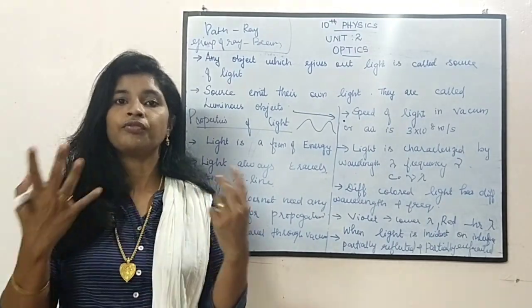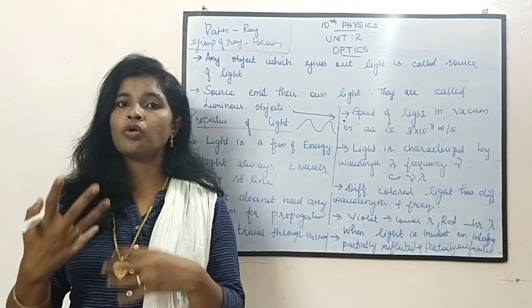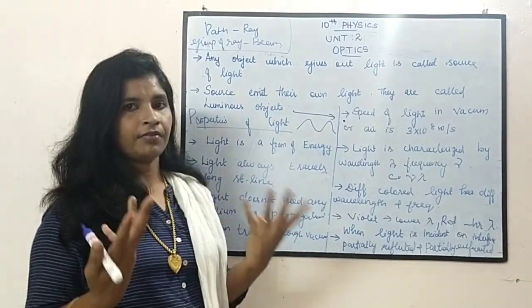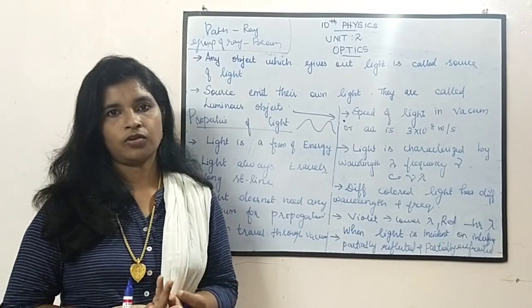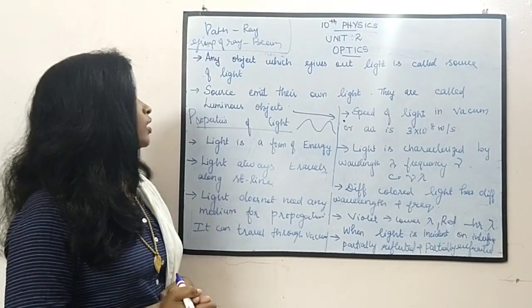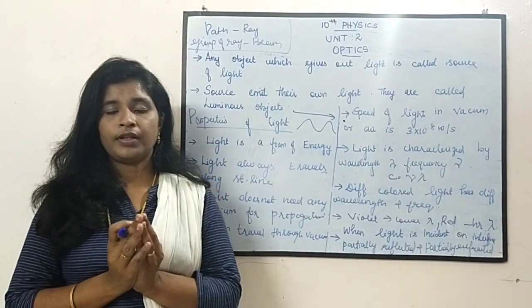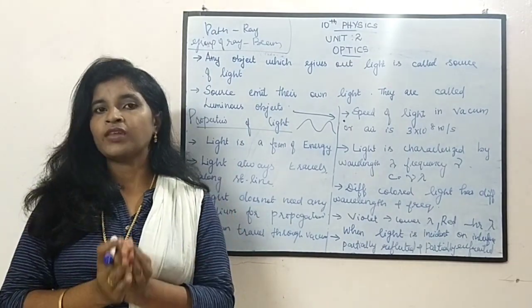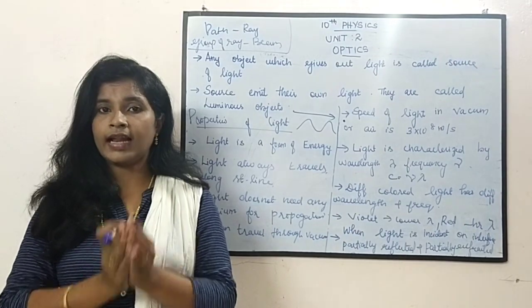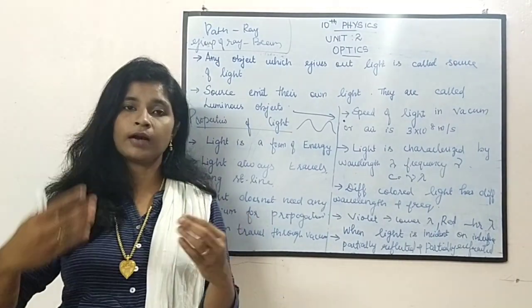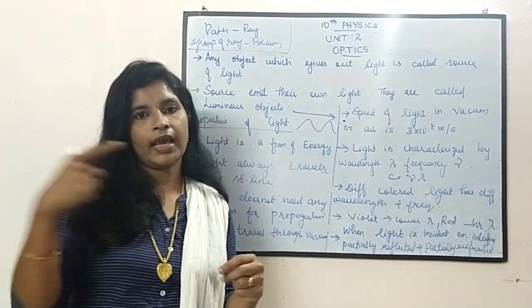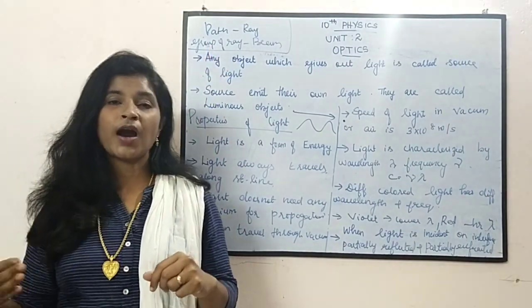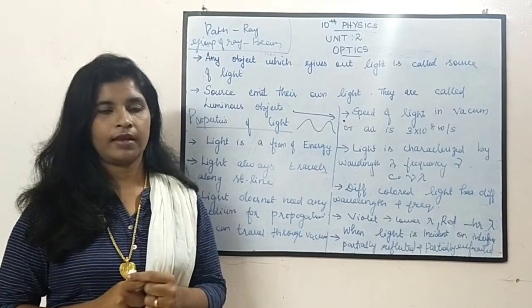You can also find out some theories, you can research over it and you can find out some other property of light. Now, I told you that light is said to travel in the form of a ray. Ray means what? What is this ray?